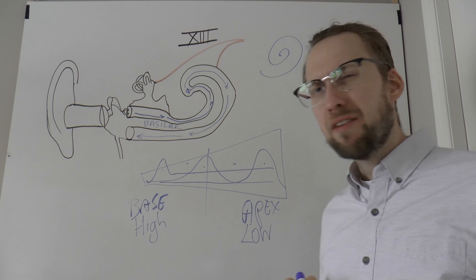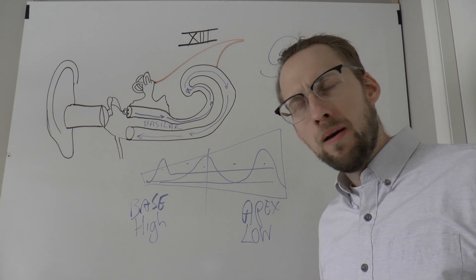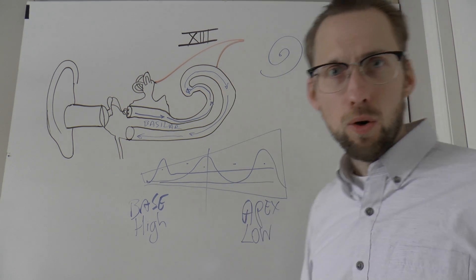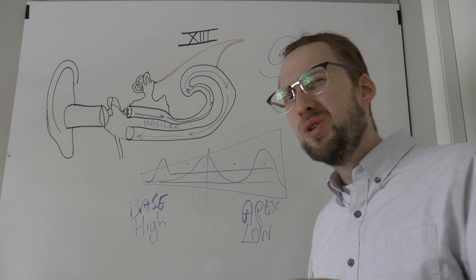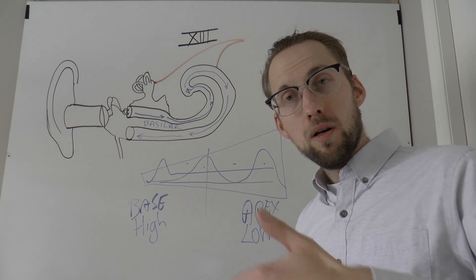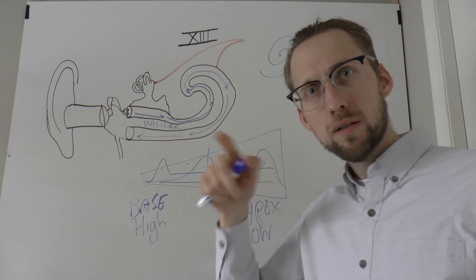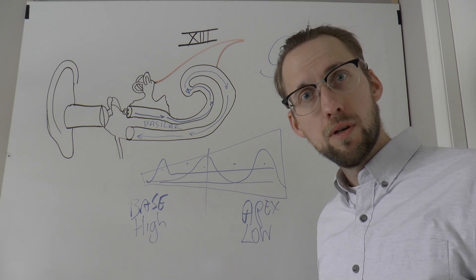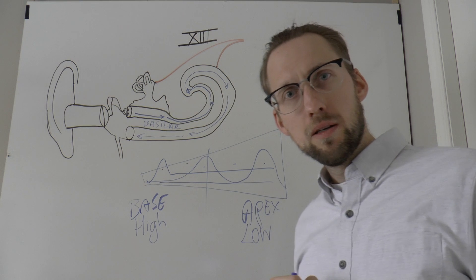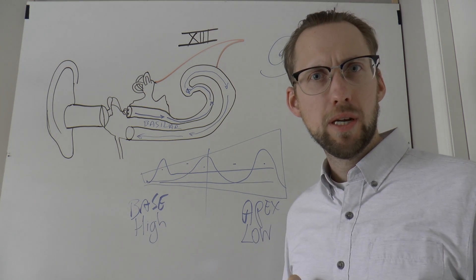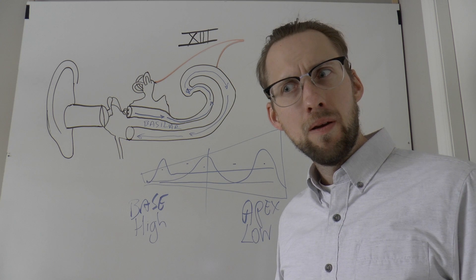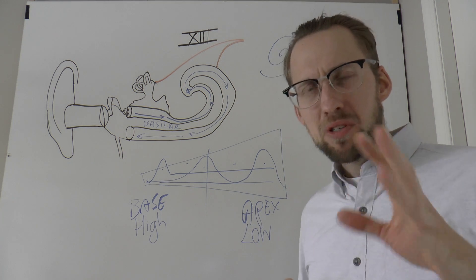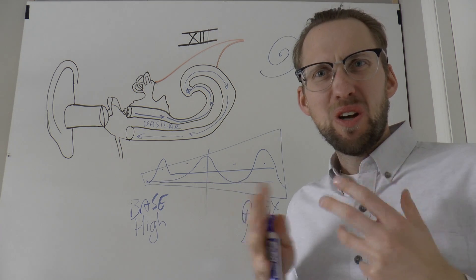Then there's frequency coding, which is simpler: it's just how many action potentials the auditory nerve fires. A 10 Hz sound — 10 cycles per second — the auditory nerve fires 10 times per second. A 100 Hz sound, it fires 100 times per second. The problem is that only works up to about 6,000 action potentials per second — beyond that it's just not possible.